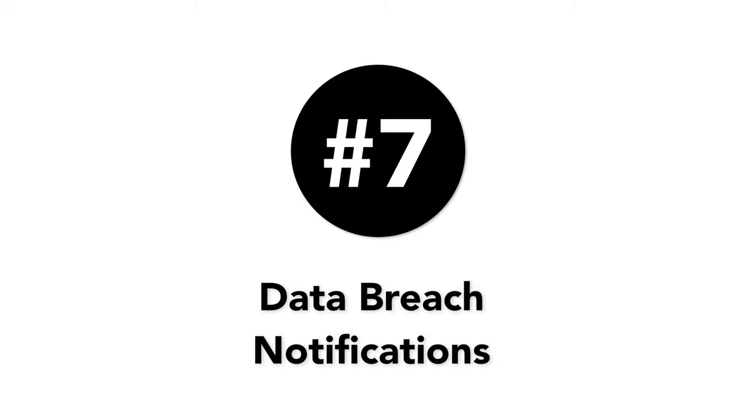Number seven is data breach notifications. The GDPR is forcing tighter deadlines for businesses to notify the national supervisory authorities and their users. Disclosure must now happen within the first 72 hours. Make sure you establish a clear step-by-step process to follow in case of a breach, including how you will inform your users and the national supervisory authorities. You may need to invest in technology that notifies you when a risk is present and ensures continuous surveillance of your data.